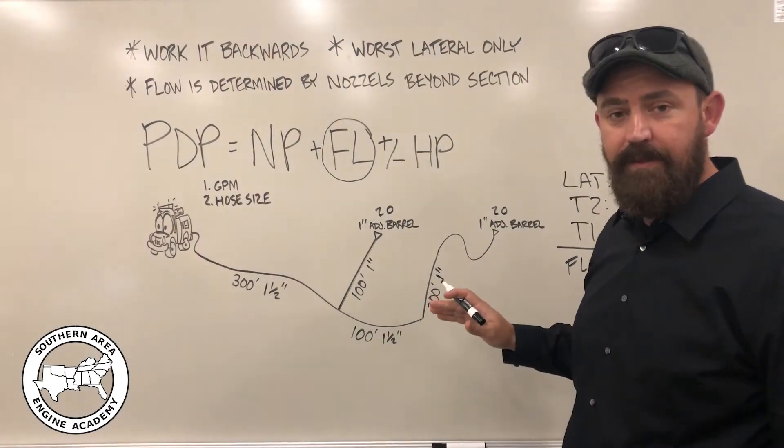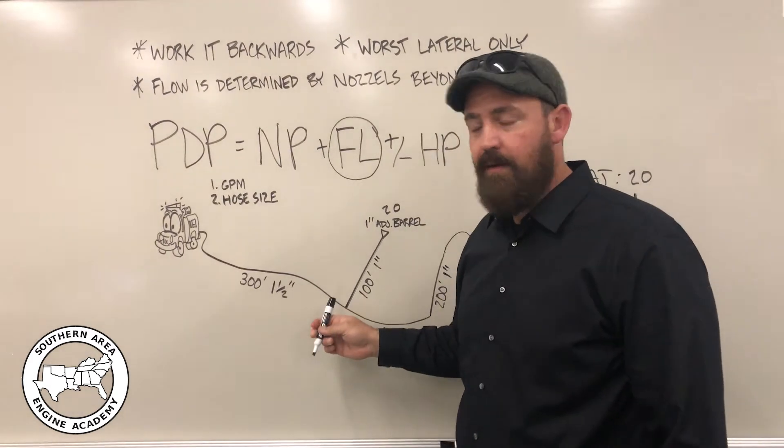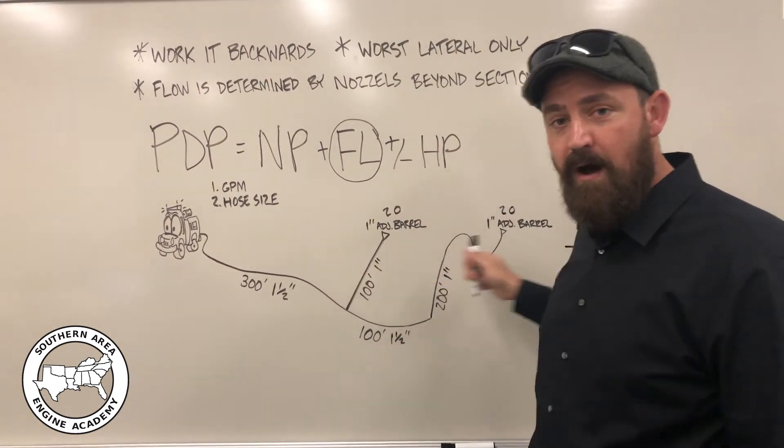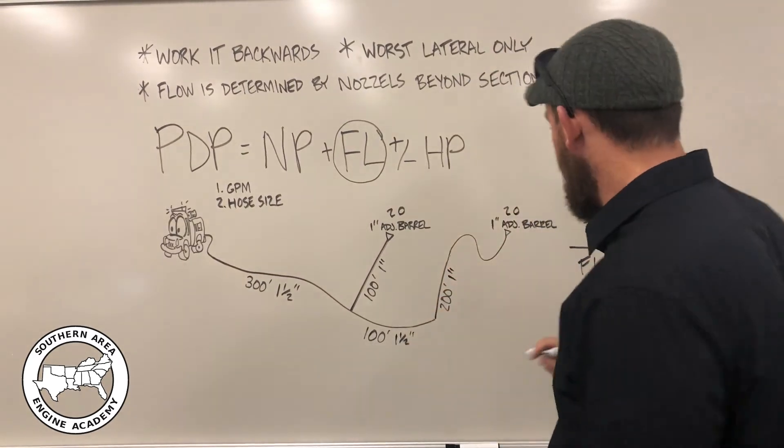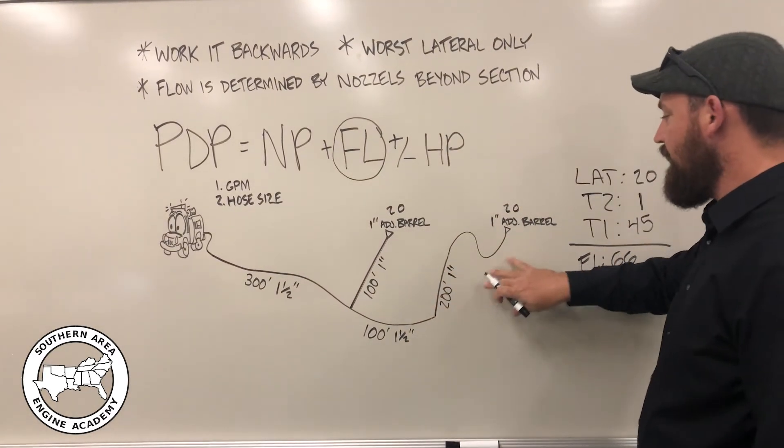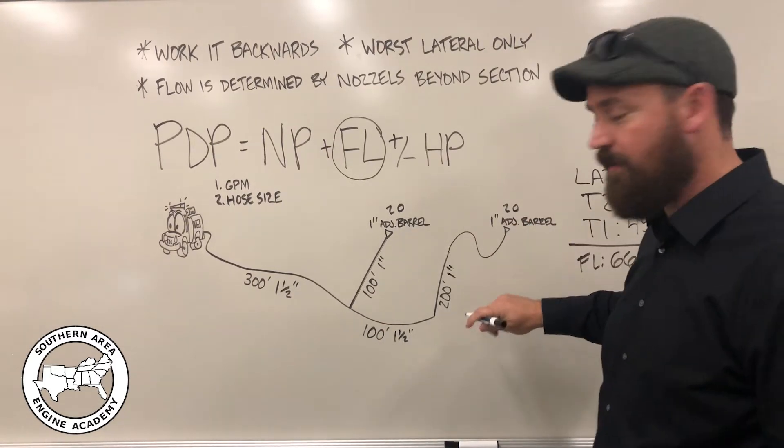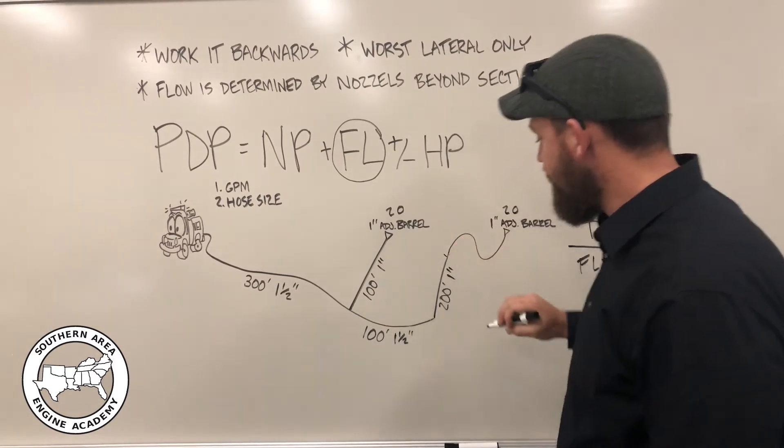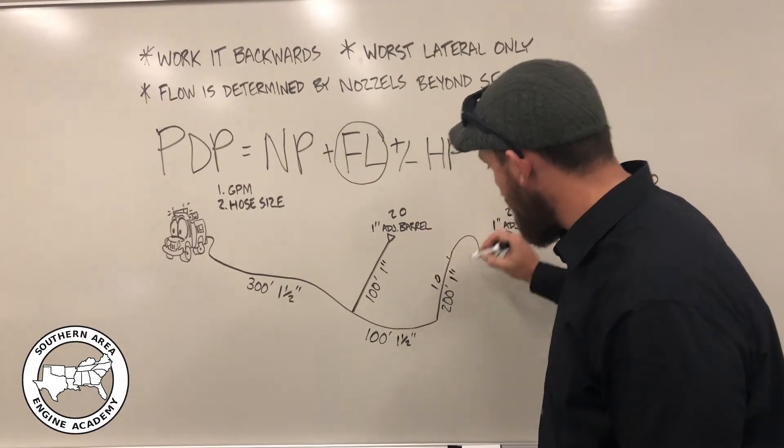So, our next rule of thumb is that the flow for each section is going to be determined by the nozzles that are beyond that point in the hose lay. So, as we've worked backwards, from our lateral here, we see we have 20 GPM of flow. So for each section of one-inch hose, that's 10 PSI of friction loss.